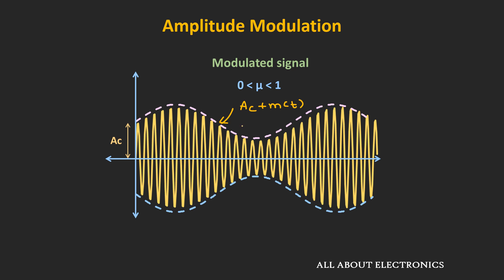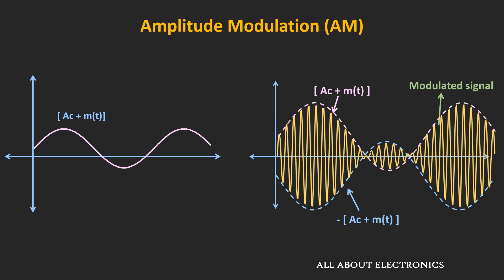This envelope detector works only when Ac plus m(t), the envelope signal, is greater than zero — or in other words, when the modulation index of the AM signal is less than 1. Whenever the modulation index is greater than 1, the envelope signal crosses the zero point, causing a 180-degree phase reversal at the crossover point. If we try to recover such an AM signal using this envelope detector, there will be distortion in the recovered signal. So for the circuit to work properly, the modulation index should be less than 1.